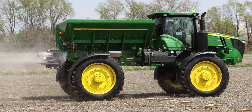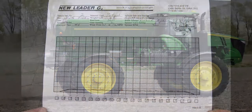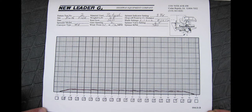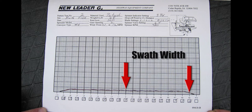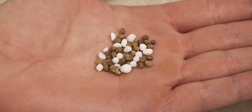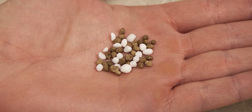Now that you have attained a desirable spread pattern, record the results on the data sheet. Then use the recorded information to determine the optimum swath width. First, locate the points on the left and right sides of the graph where the material is half the volume of the zero-foot mark, or center tube. The distance between these two points represents the swath width. When blended fertilizers are being applied, a visual inspection of the samples should be made to determine whether the blend within the effective swath width is consistent with the desired blend. If the blend is not consistent, a narrower overall swath width should be used.